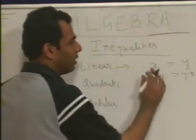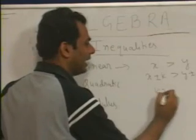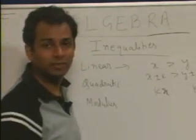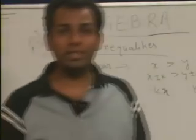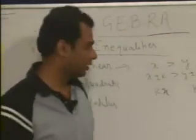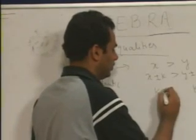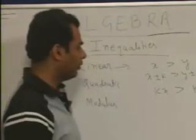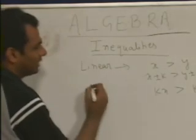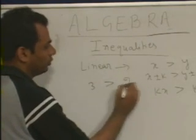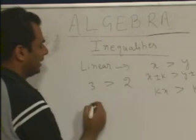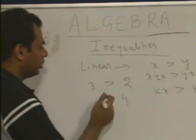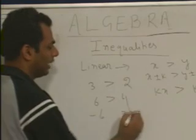When we multiply k on both sides to get kx and ky, we cannot straightaway say kx is greater than ky — it depends on whether k is positive or negative. kx is greater than ky only if k is greater than 0. For example, 3 is greater than 2; multiply by 2 and you get 6 > 4, which is correct. But if you multiply by −2 you get −6 and −4, and here −4 is greater than −6.